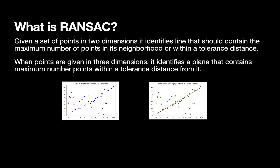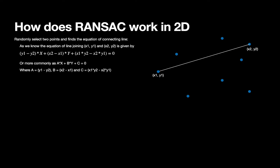RANSAC, or Random Sample Consensus, is an algorithm that, given a set of points in two dimensions, identifies the line that should contain the maximum number of points within a tolerance distance. When points are given in three dimensions, it identifies a plane that contains the maximum number of points within a tolerance distance from it. Here we have a set of points in two dimensions where x varies from 0 to 20 and y varies from 0 to 40, and we are trying to find the equation of the line which has the maximum number of points in its neighborhood.